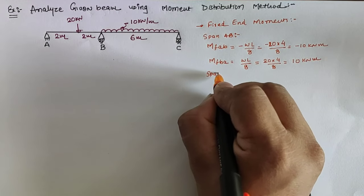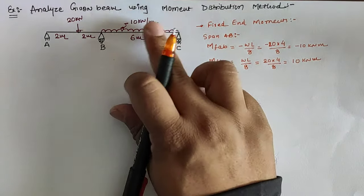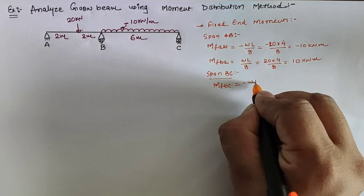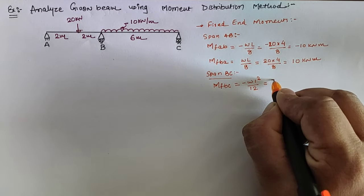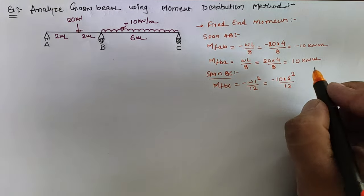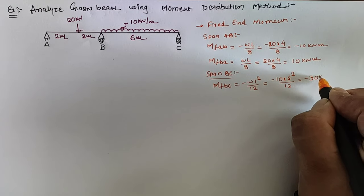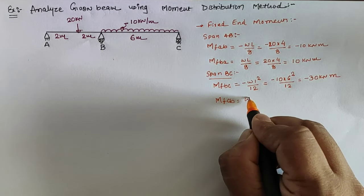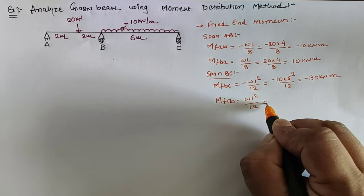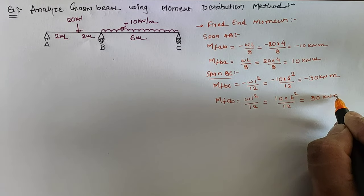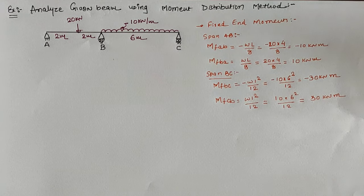For span BC, which is loaded with UDL over the entire span, the fixed end moment from B to C is negative WL²/12. With W equal to 10 and L equal to 6 meters, that gives 10×36/12, which equals minus 30 kilonewton meter. And for C to B the fixed end moment is plus WL²/12, which equals plus 30 kilonewton meter.